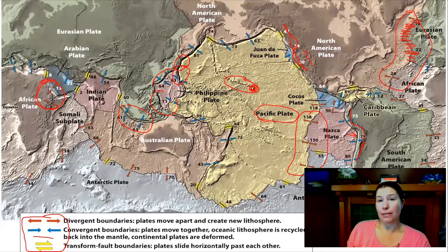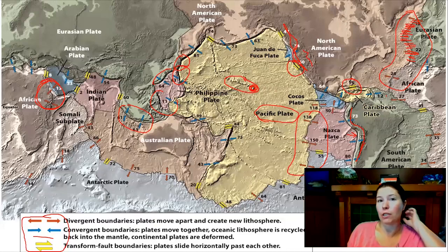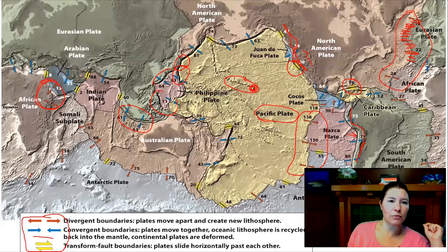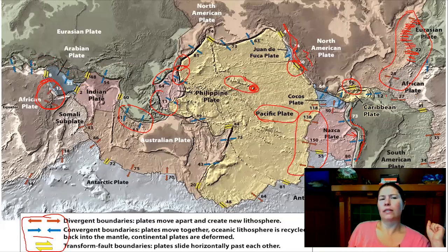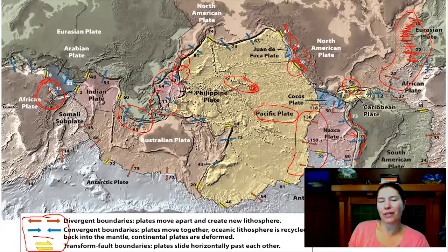Where transform plate boundaries are famous is when they are on land, responsible for big earthquakes. The San Andreas Fault in California is a good example. There's also the Enriquillo-Plantain Garden Fault in the Caribbean—responsible for Haiti's devastating earthquake in 2010. Turkey has a big transform plate boundary called the North Anatolian Fault. Where these boundaries occur on land, we have some of the biggest, most devastating earthquakes because people are there. Those are the three major kinds of plate boundaries.